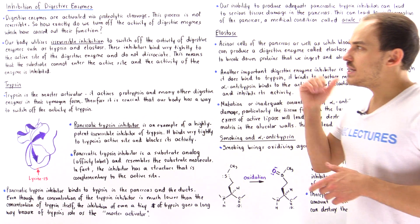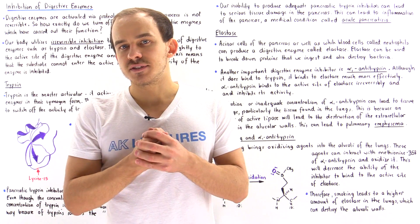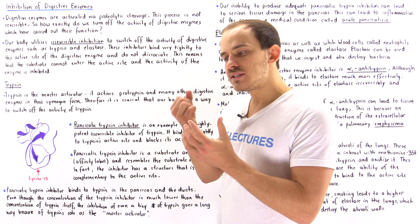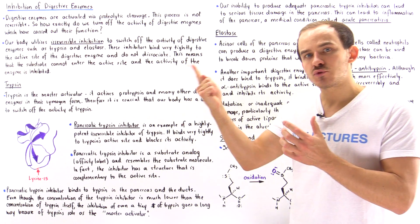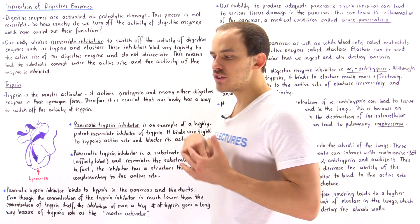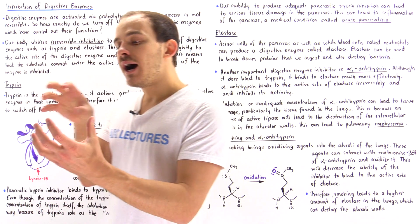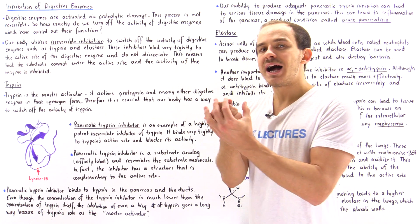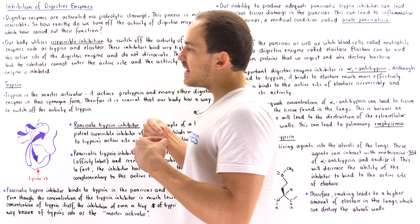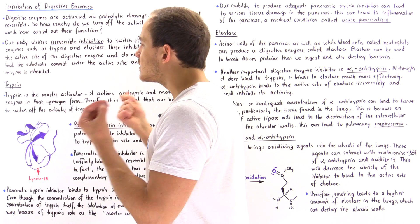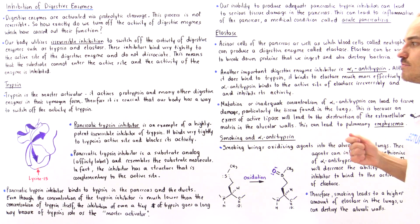These inhibitors bind into the active site of the enzyme, blocking substrate molecules from entering. Because the inhibitor binds irreversibly to the active site, it cannot dissociate, and this blocks and inhibits the activity of that digestive enzyme.